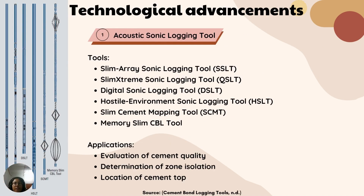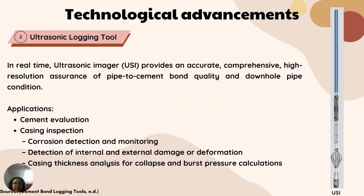Moving to the technological advancements for cement bond logging tools, there are two categories. First is the acoustic sonic logging tool. These tools help evaluate cement quality, determine zone isolation, and determine the location of the cement top. The second category is the ultrasonic logging tool, which helps evaluate the cement and inspect casing in terms of detecting corrosion, detecting internal and external damage, and analyzing casing thickness.